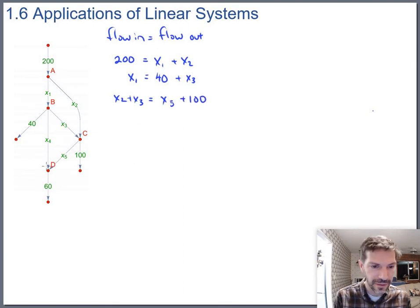And finally, node D, the input is x4 plus x5. And the outflow is just 60.